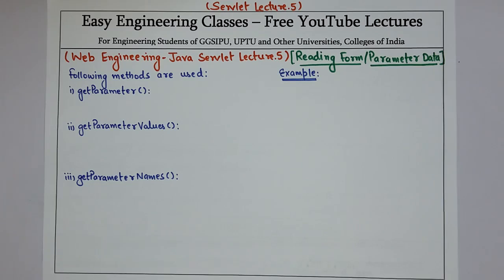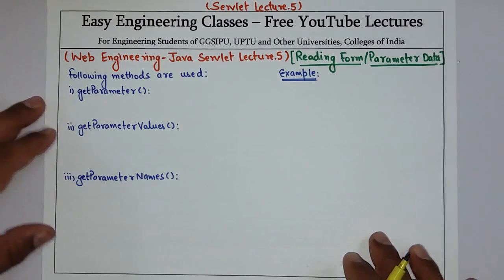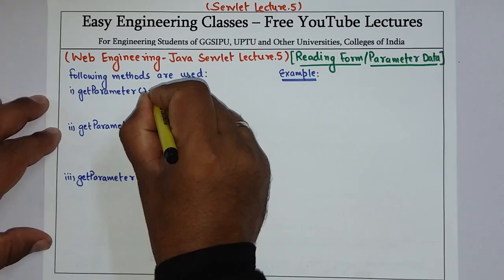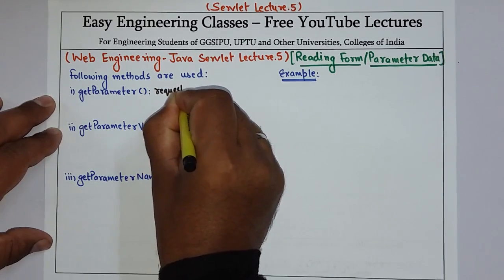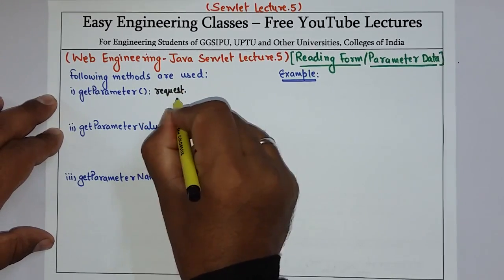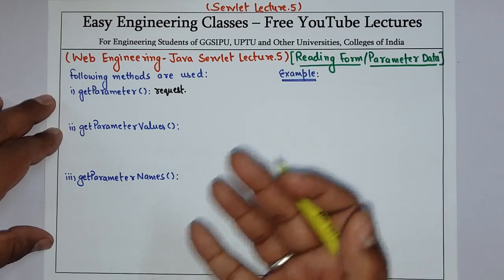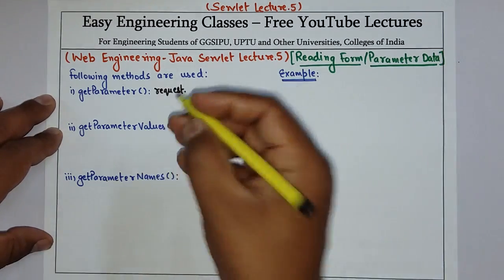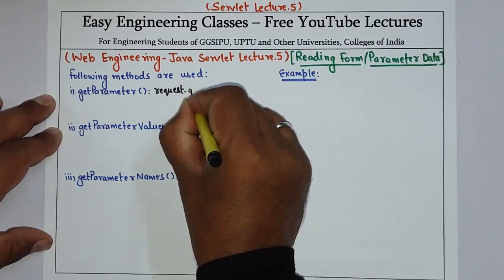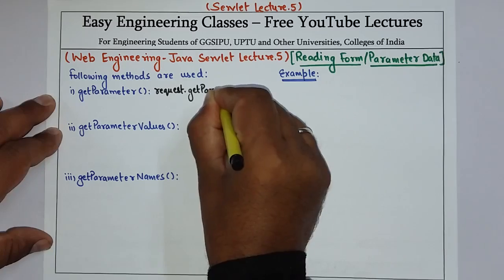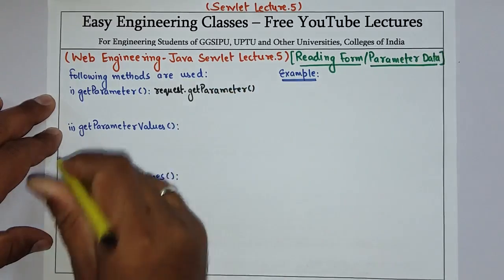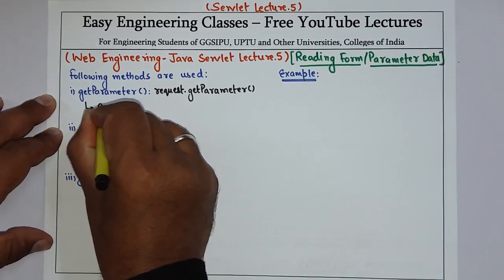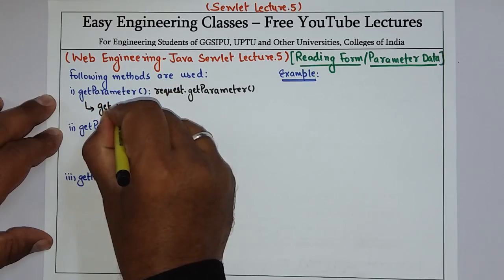There are three methods that are normally used. The first method is getParameter. You can call request.getParameter — we use the request object because the request is coming from the browser or any other client. The request.getParameter method is used to get the value of a form parameter.